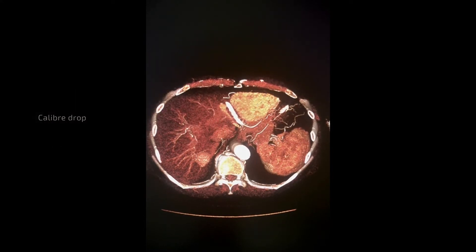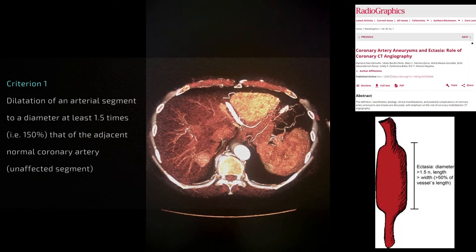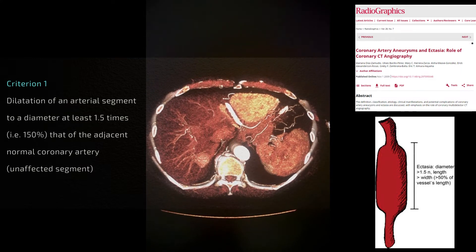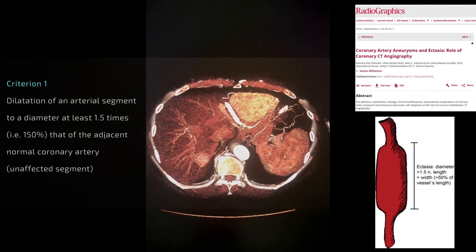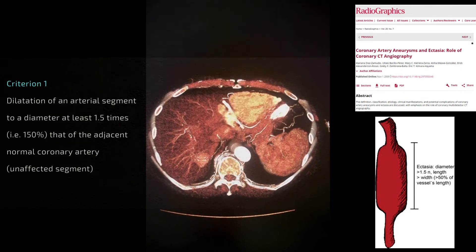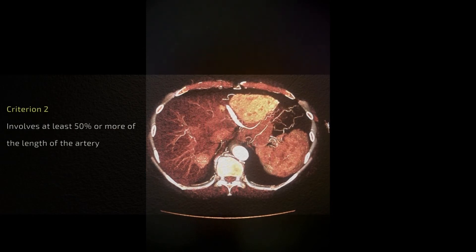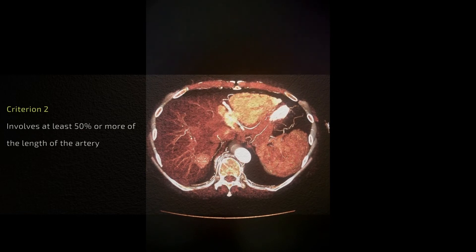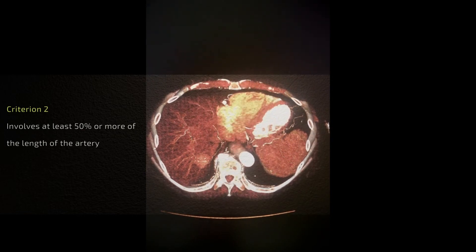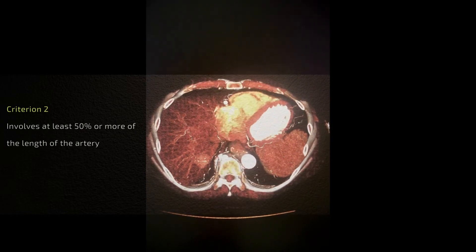According to the usually accepted definition, a caliber change of more than 150 percent, or 1.5 times the adjacent caliber, is sufficient to classify as ectasia, as opposed to a focal aneurysm or other form. This segment should involve at least 50 percent or more of the length of the coronary artery.